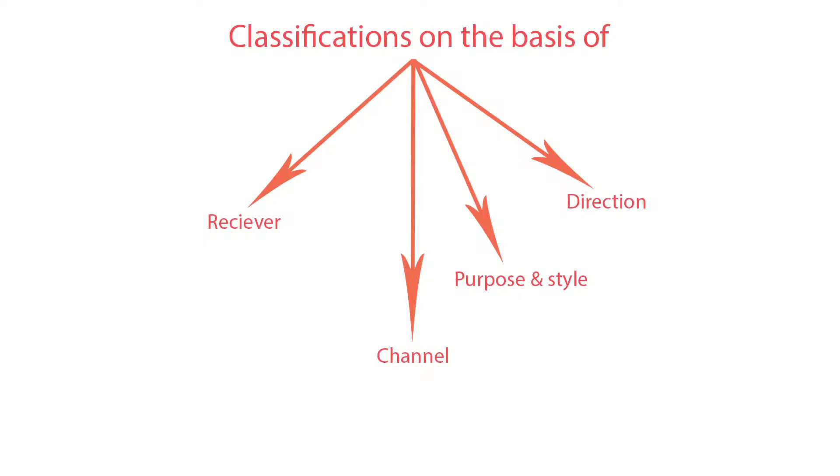Communication is very important in our day-to-day life. We communicate based on our message, context, channel, and receivers. So there are different types of communication. We classify communication on the basis of receiver, on the basis of purpose or style, on the basis of channel, and on the basis of direction.